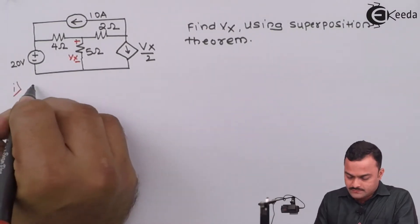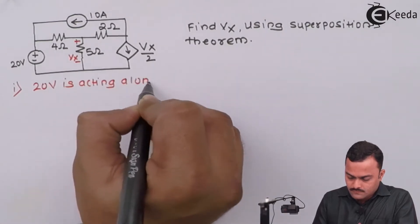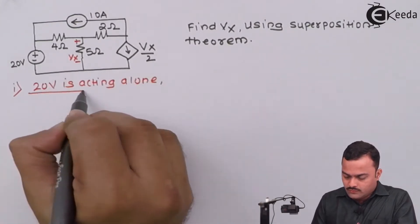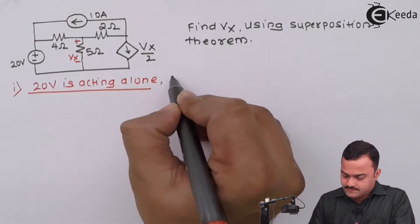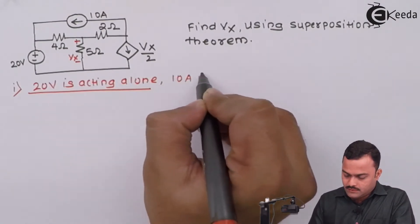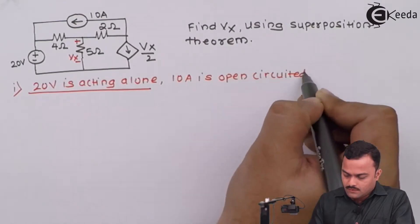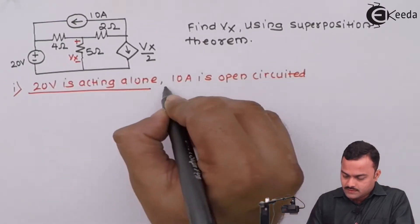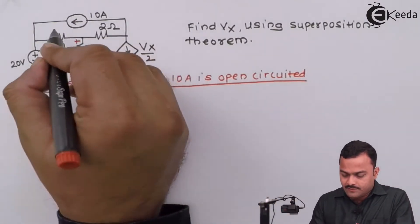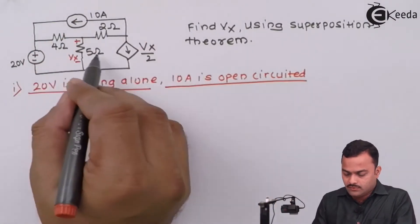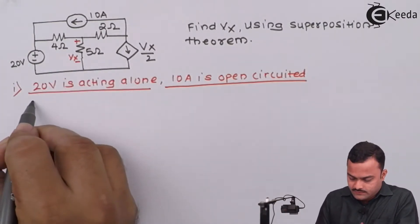First, I'm considering 20 volts acting alone. For the 10 ampere current source, we will open-circuit it. So 10 ampere is open-circuited. If I open-circuit this 10 ampere branch, we will get only two loops present in the circuit.